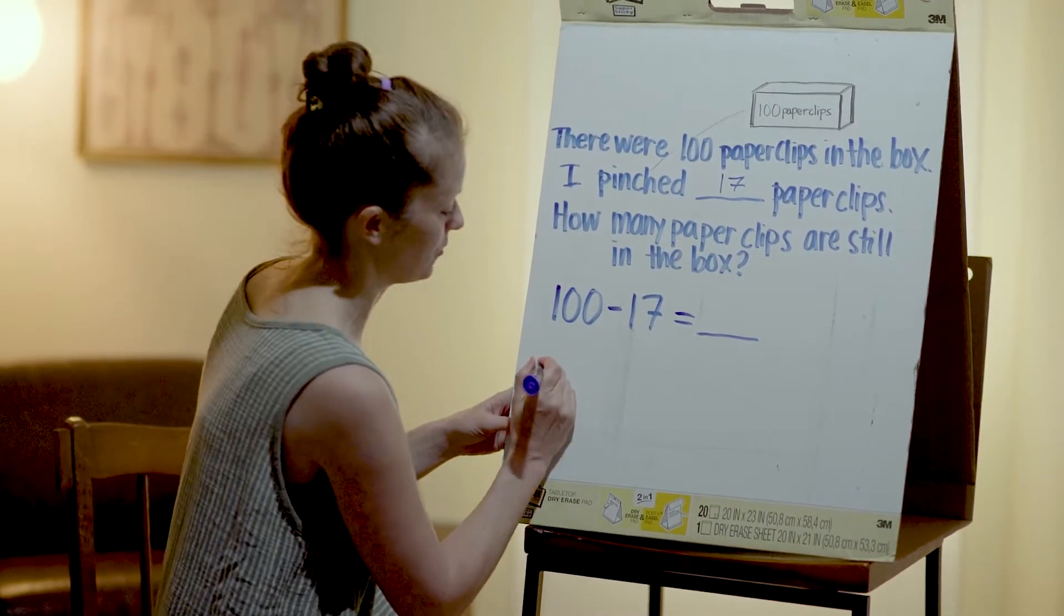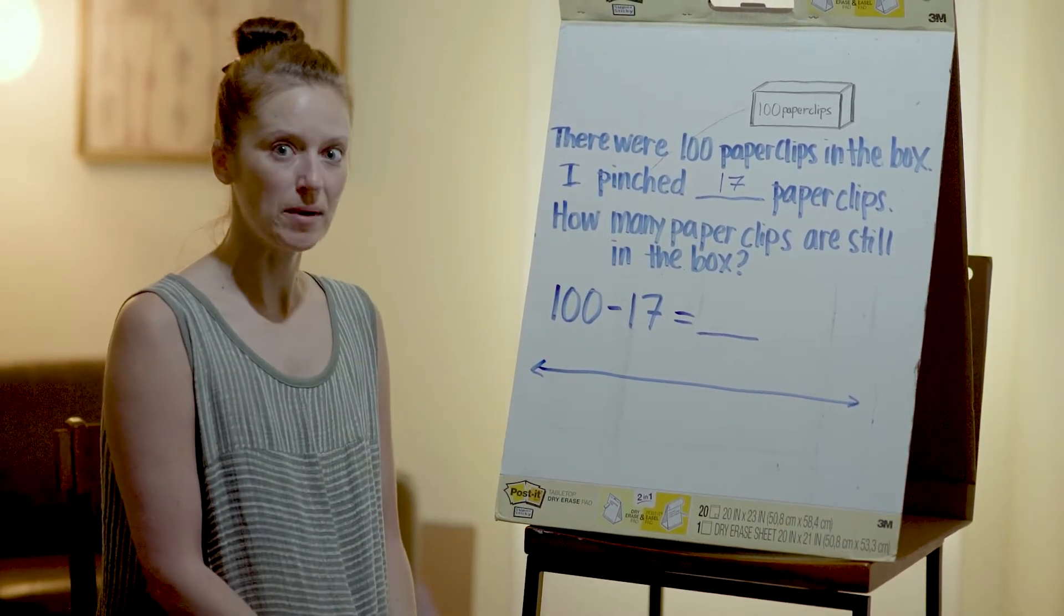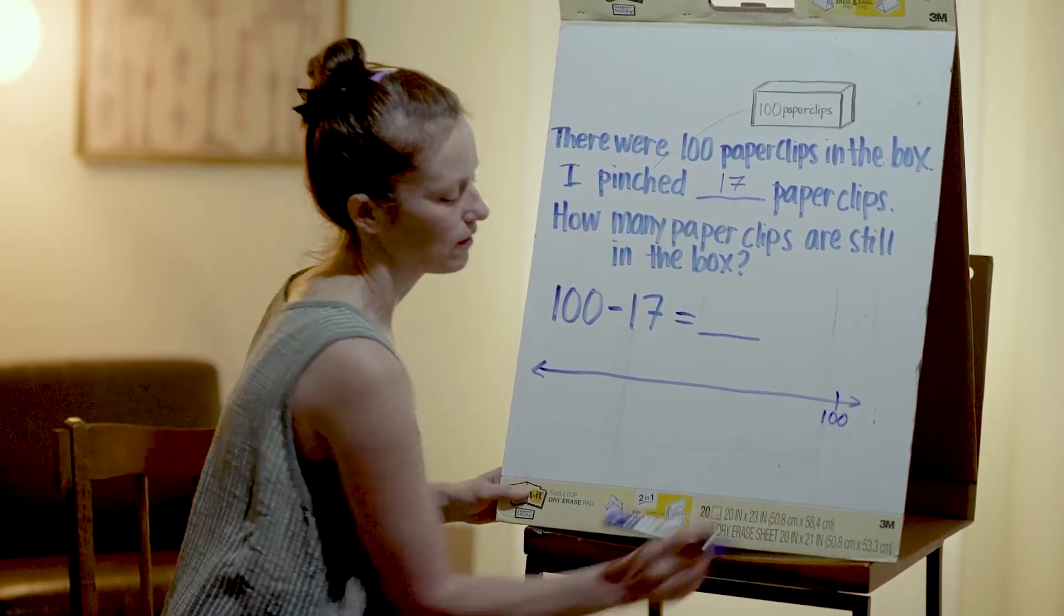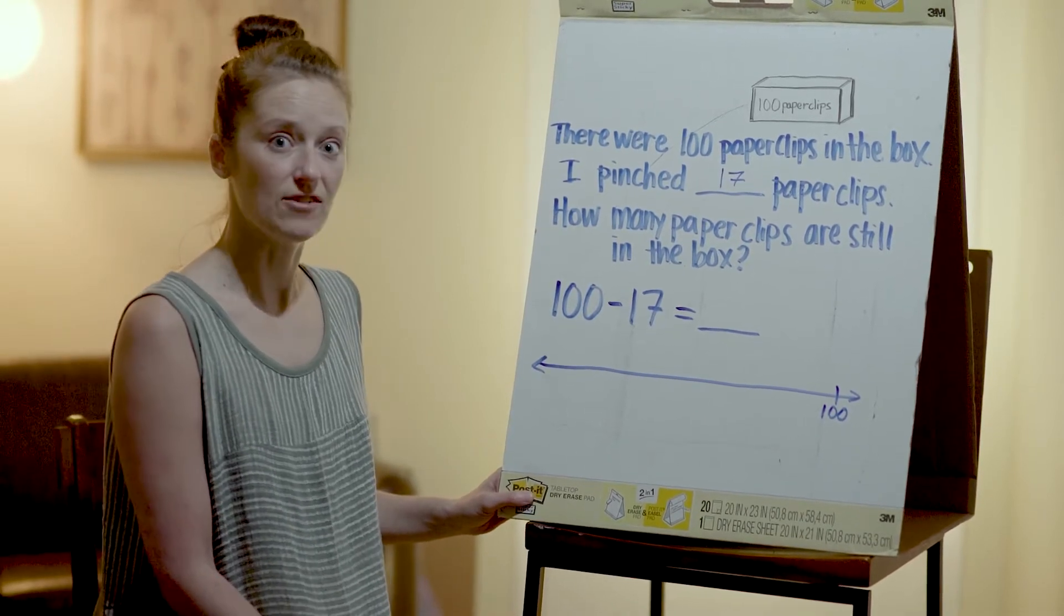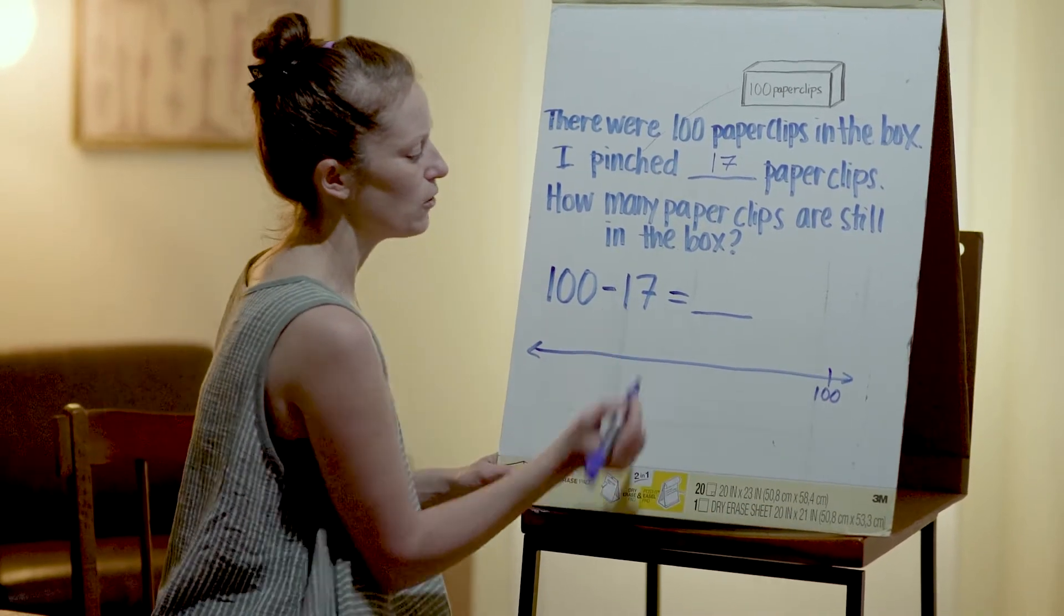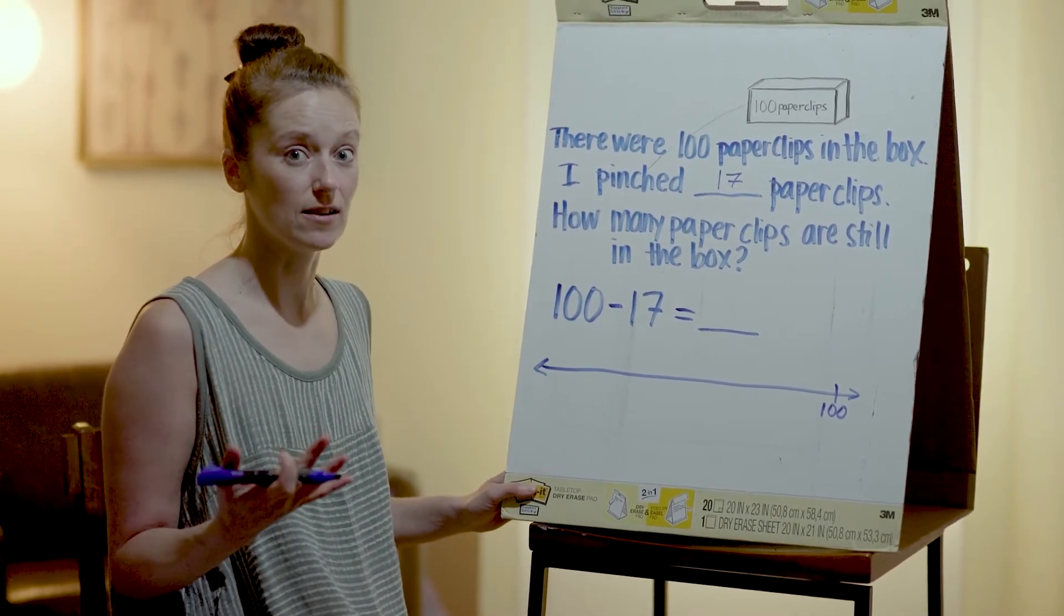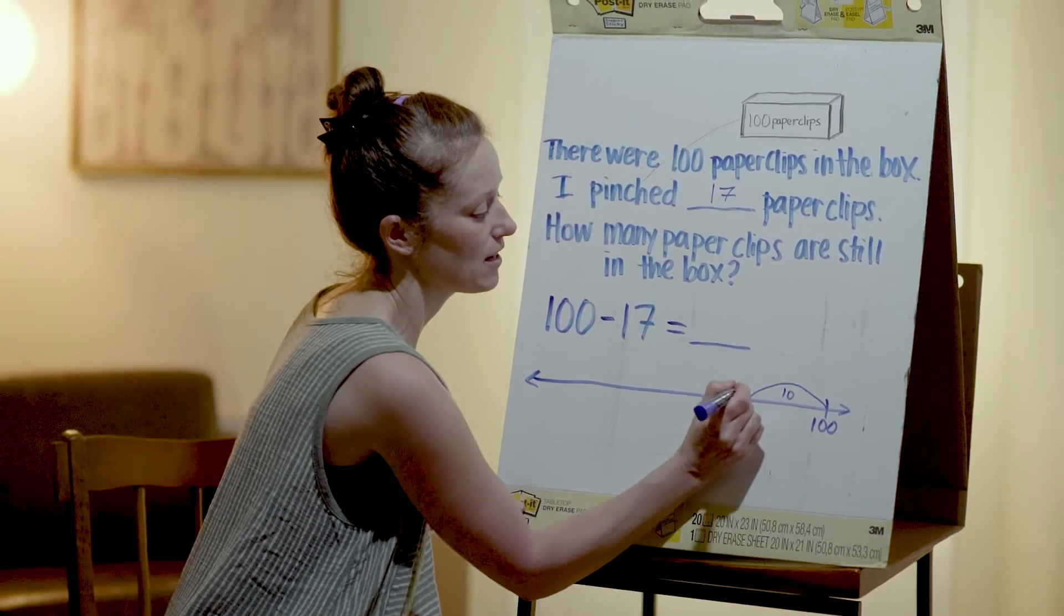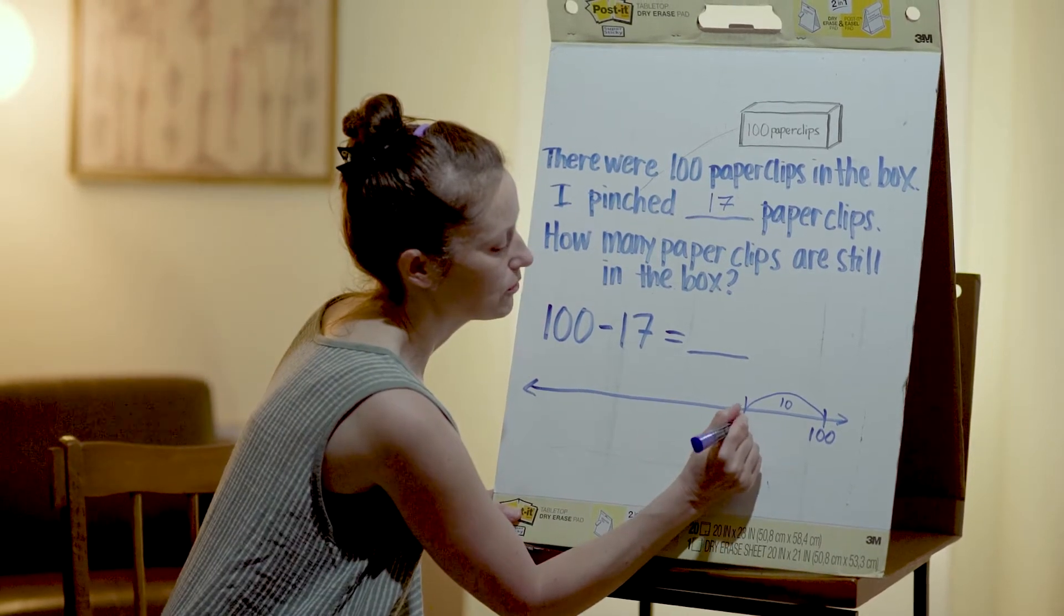So I'm going to say, let's try jumping back. Since we're subtracting, we're going to start here at our 100 mark. And we're going to jump back. We know we're going to jump back 17, right? And we'll see where we land. So we're at 100. I know that there's a 10 and a 7 in 17. I could also break that 7 down into a 5 and a 2. But first I'm going to start with my friendly number. I'm going to jump back 10. And I know that if I jump back 10 from 100, I get to 90.